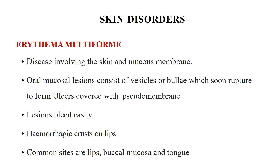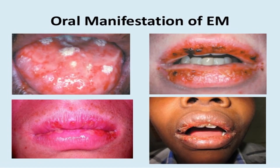A distinctive feature of erythema multiforme is the formation of hemorrhagic crusts on the lips. Skin lesions consist of erythematous patches on the palms, soles, and extensor surfaces of the extremities. Oral lesions may occur without skin involvement in 20% of cases. The disease is self-limiting; management is mainly supportive, and steroids can be used for severe forms.